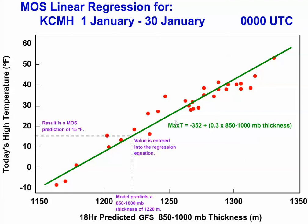With the regression equation, when the dynamic model predicts a value for 1,850 millibar thickness, the linear equation is used to convert this value directly to a daily maximum temperature forecast. In this case, let's say the dynamic model predicted a thickness of 1,220 meters.